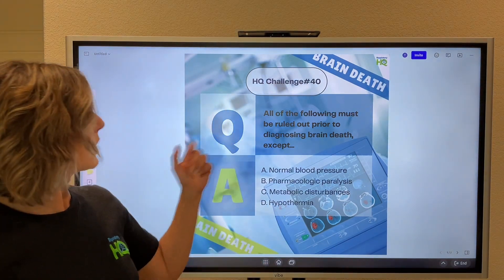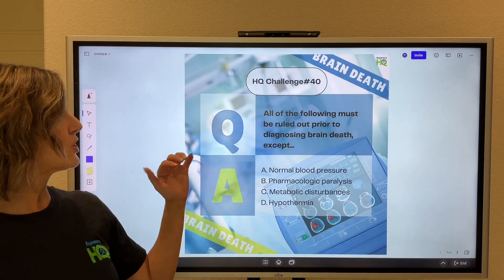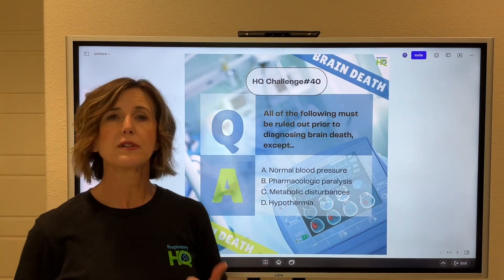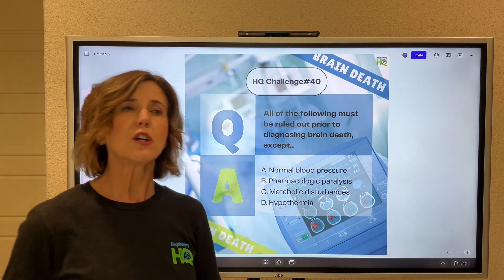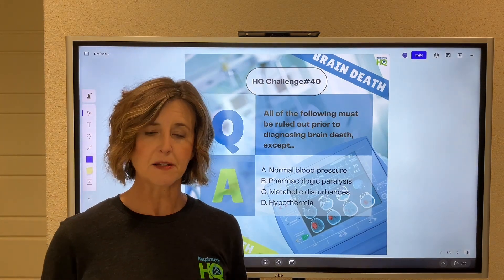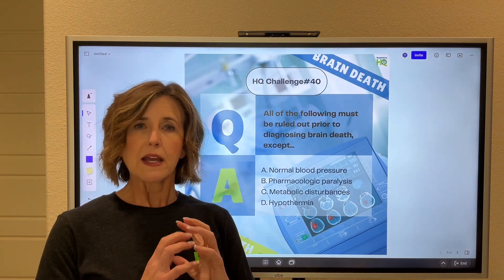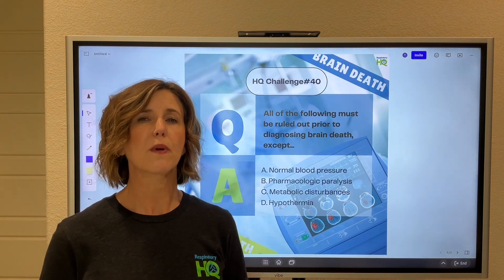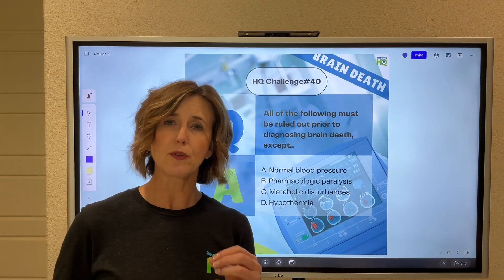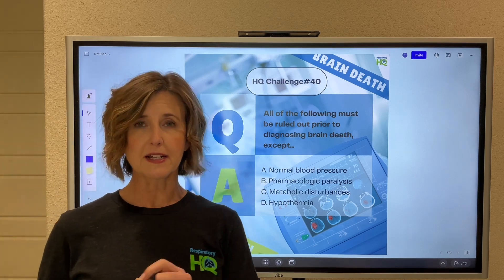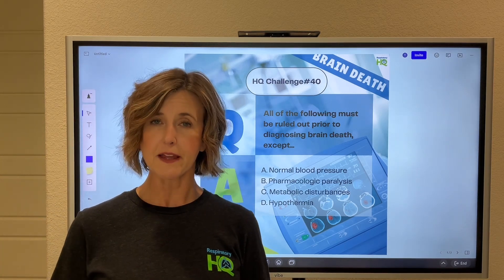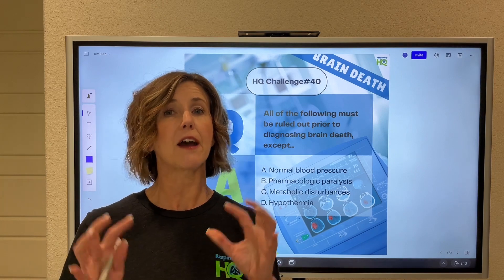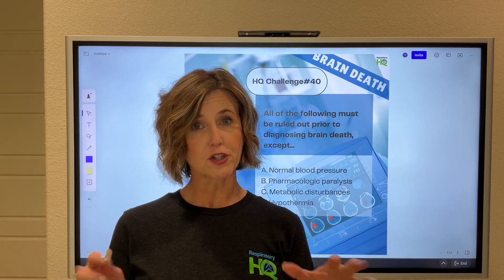Today we're going to talk about the conditions that must be ruled out prior to diagnosing brain death. Before you can do any testing or any type of diagnosis for brain death, you have to rule a few things out, because there are things that can mimic brain death and we need to make sure that the patient doesn't have those conditions.